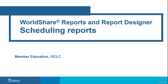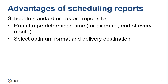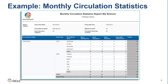In this video about scheduling reports, you'll learn how to schedule a report, including selecting a destination, and how to retrieve scheduled reports. You can schedule both standard and custom reports to run one time or on a recurring basis — for example, the end of every month — and you can select an optimum format, such as Excel or PDF, and a delivery destination. To illustrate these procedures, I'll use the monthly circulation statistics report as an example.